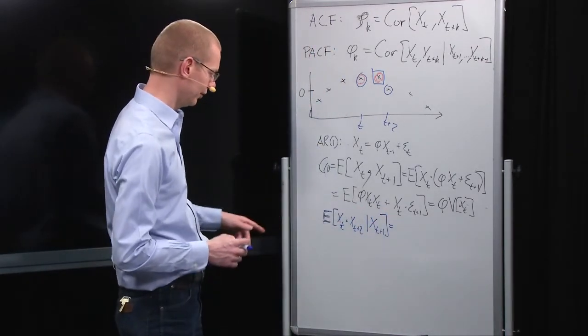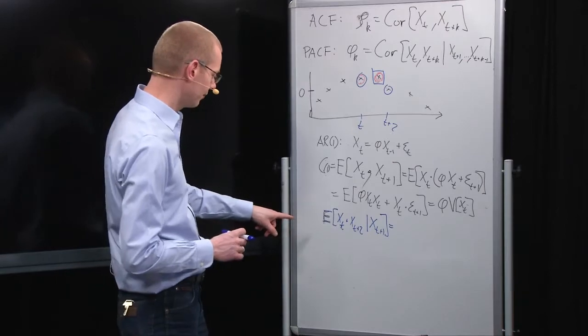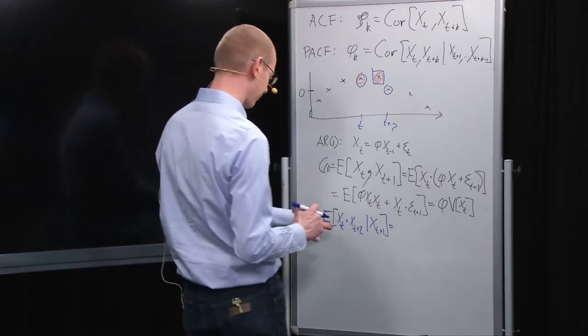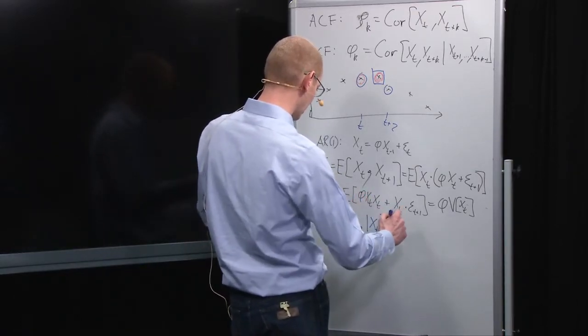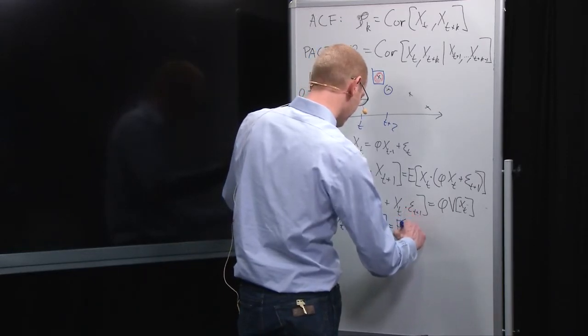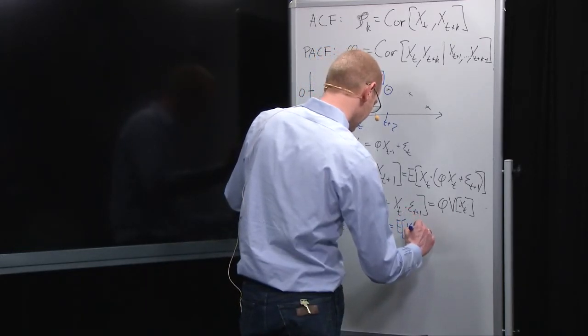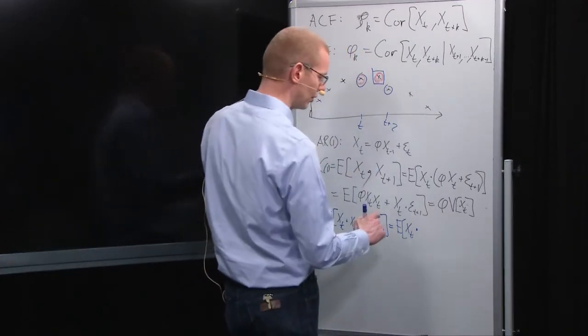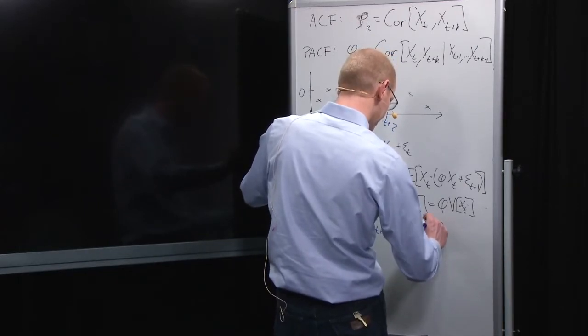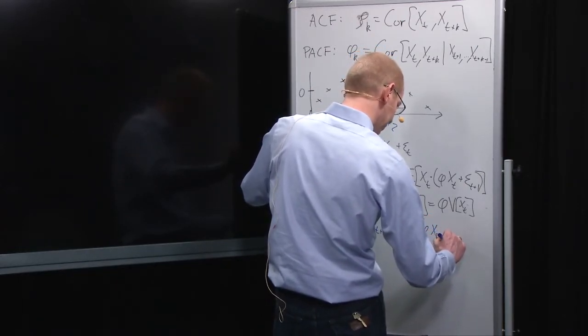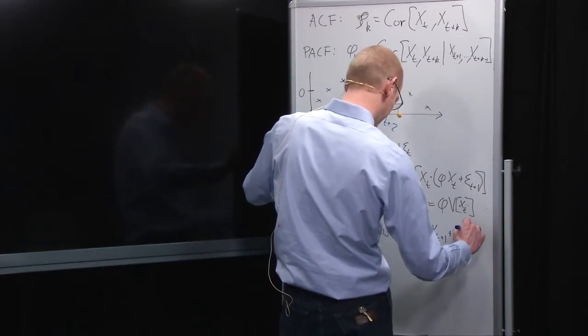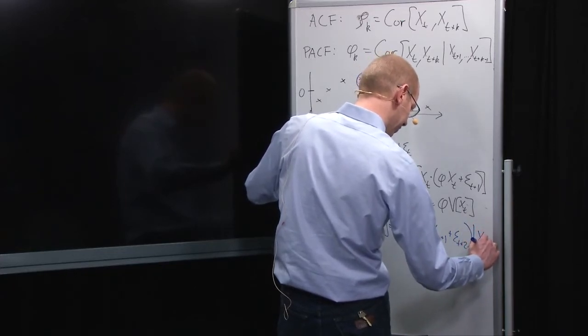Now, what can I say about this? First of all, let us just plug in what we have. So, we have the expectation, let's do as before, of x t times the same thing as we did over here, phi x t plus 1, it becomes now, plus epsilon t plus 2, given that we know x t plus 1.